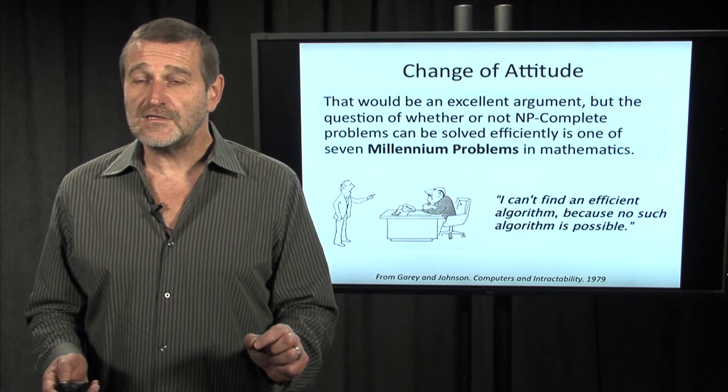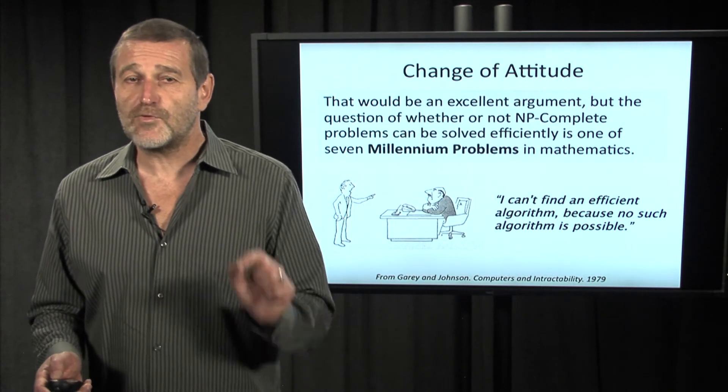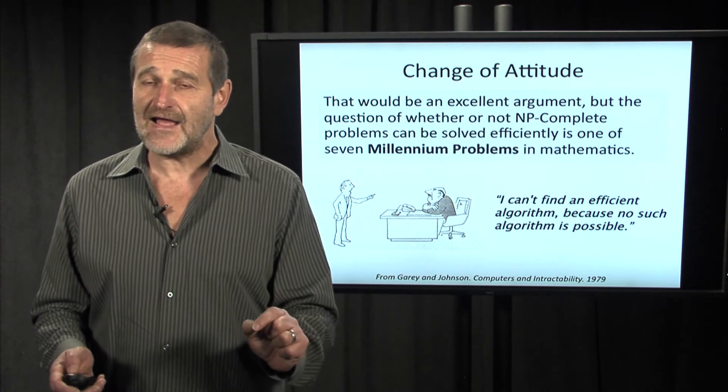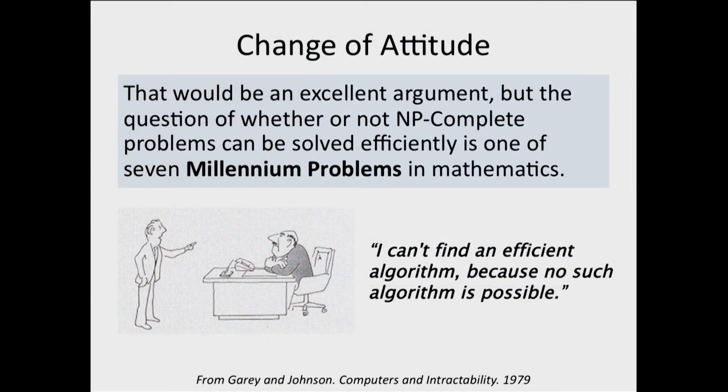But it turned out to be very difficult to prove that there is no efficient algorithm for this problem. And in fact, the Hamiltonian path problem belongs to one of seven millennium problems of mathematics that remains open.